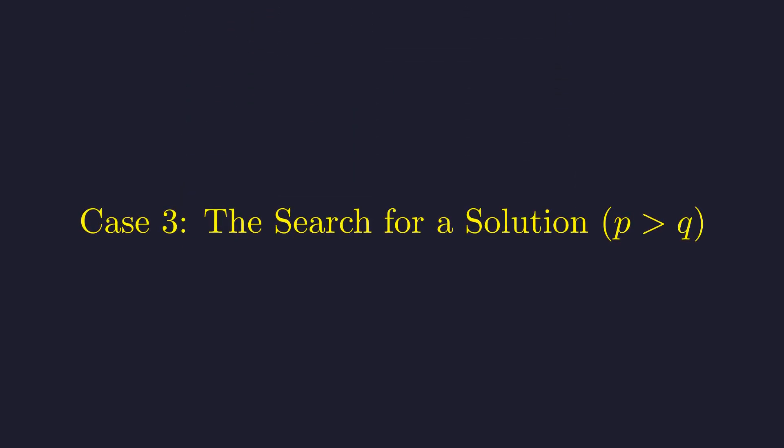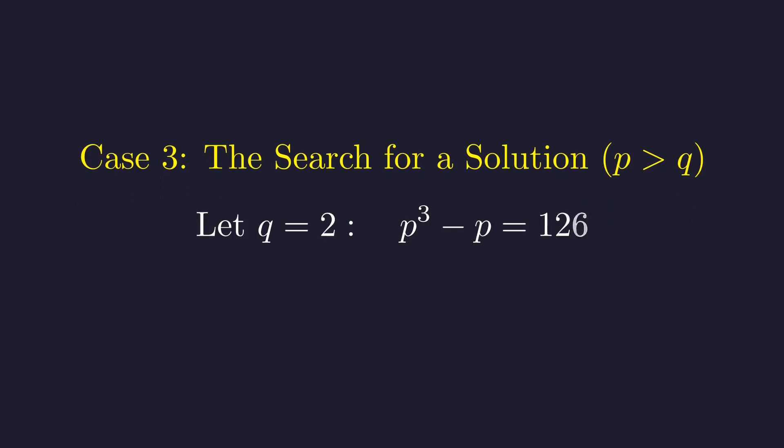We now search for solutions under the constraint that p is greater than q. We begin by testing the smallest prime value for q. If q equals 2, the equation becomes p cubed minus p equals 126. Using 2-adic valuation, the valuation of q to the 7th minus q is 1. For any odd prime p, the 2-adic valuation of p cubed minus p is at least 2. This contradiction shows q equals 2 has no solutions.